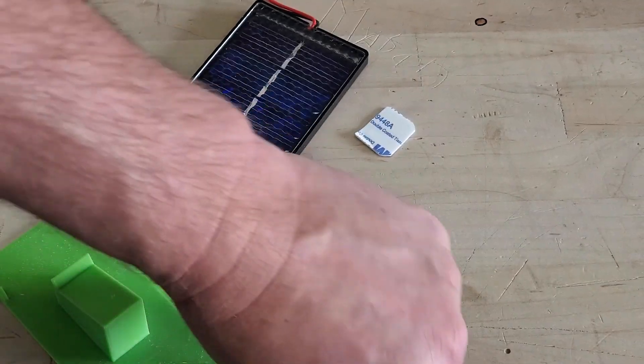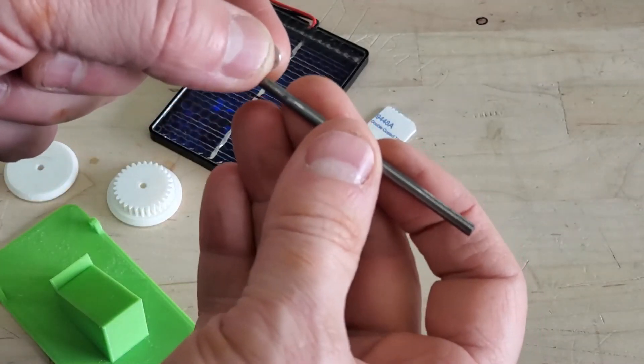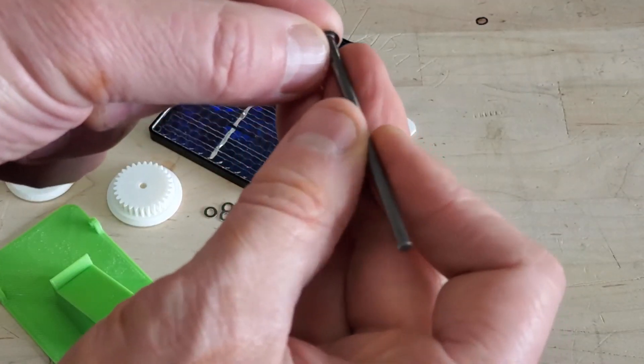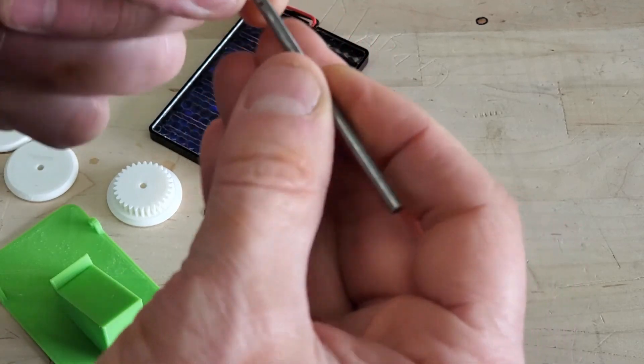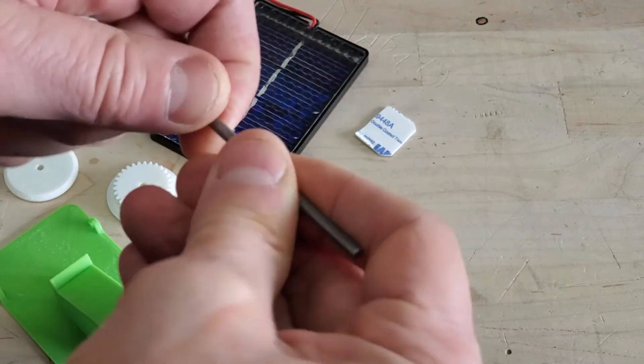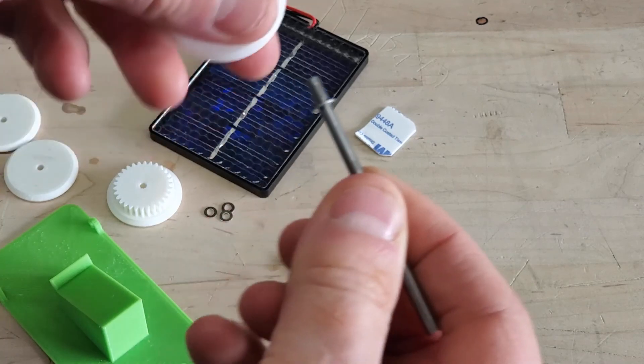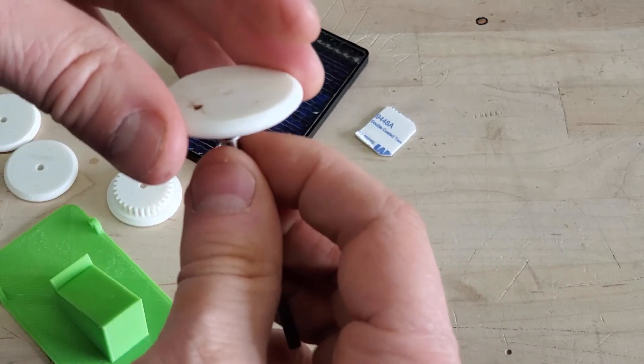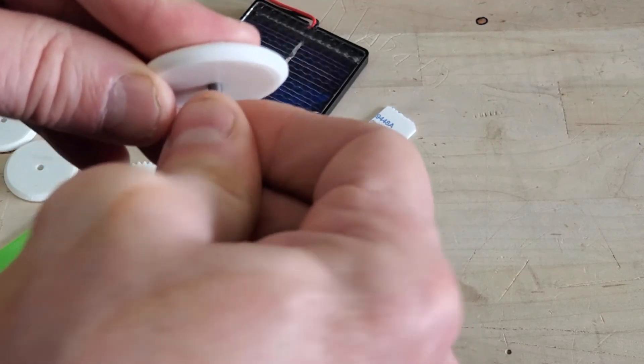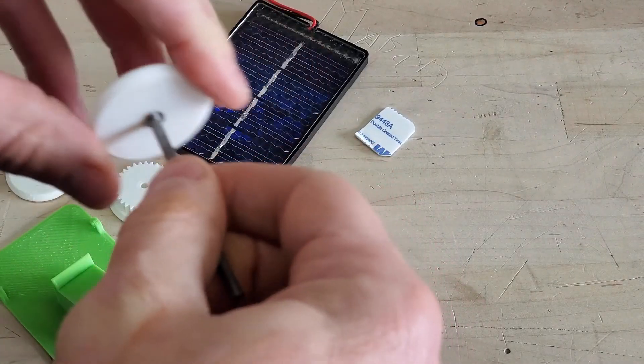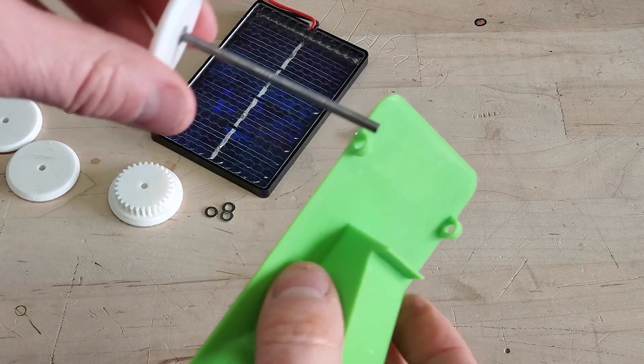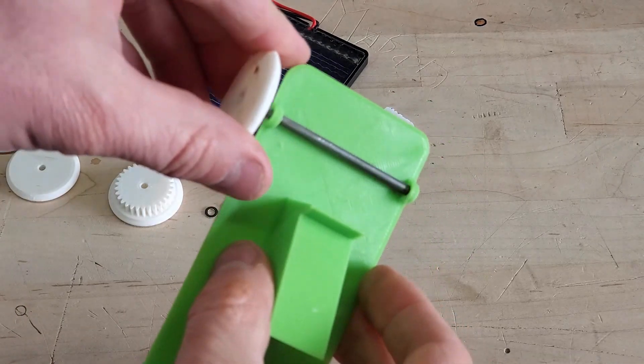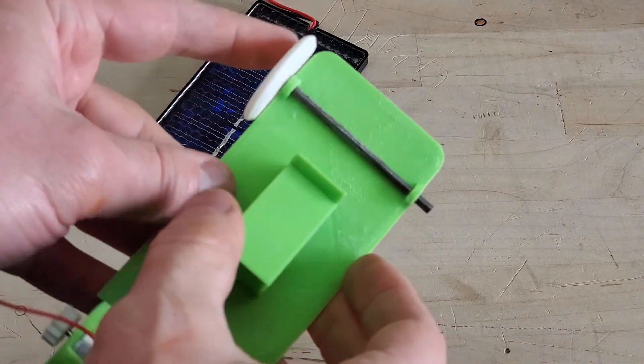You don't need a washer, but if you'd like to use one, slide it over the axle. Then press your axle into the wheel hole. Grab your chassis and slide your axle through the chassis.